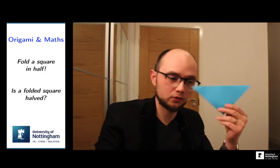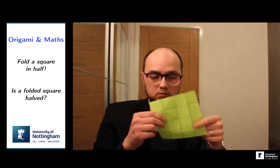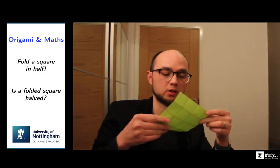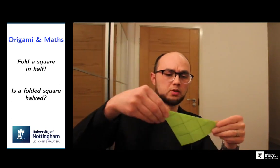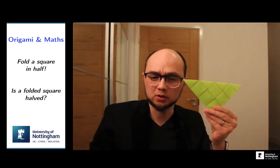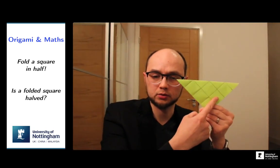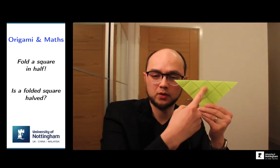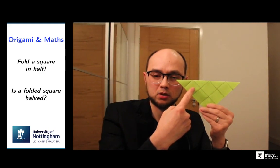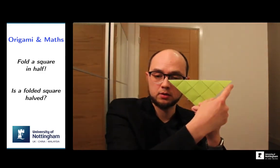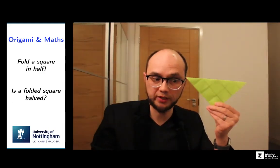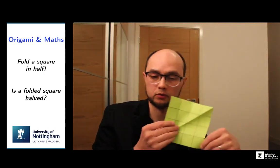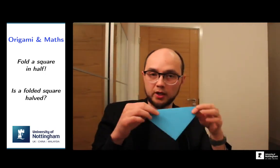Does that diagonal fold give half of the square? Let's look at the 16-square grid and do it here. How many squares do you count? One, two, three, four, five, six — and then we've got a number of half squares: two halves, three halves, four halves. So six plus four halves is eight — that's again half of 16. If you thought of the diagonal fold, well done!